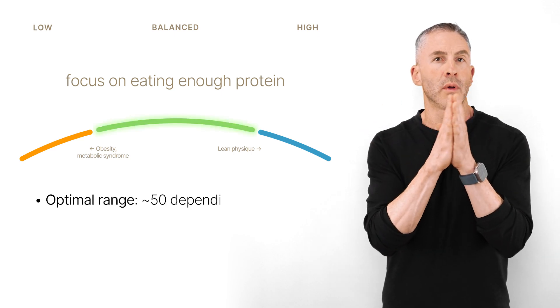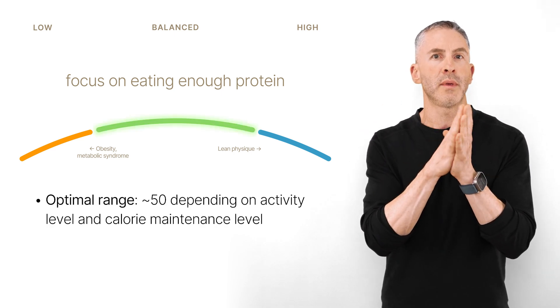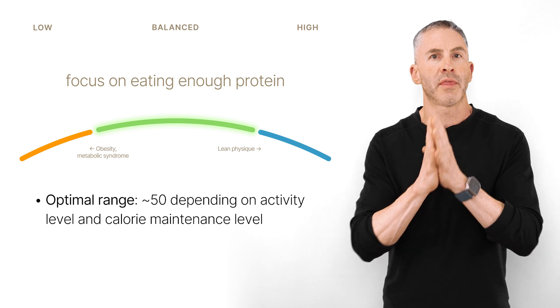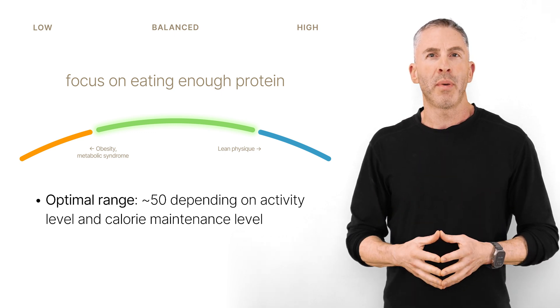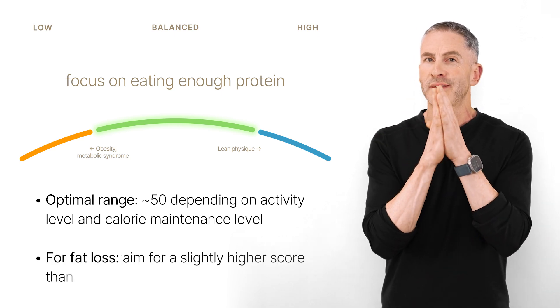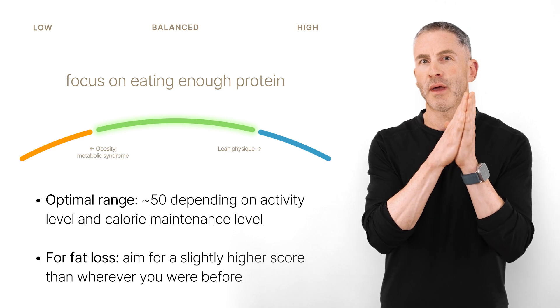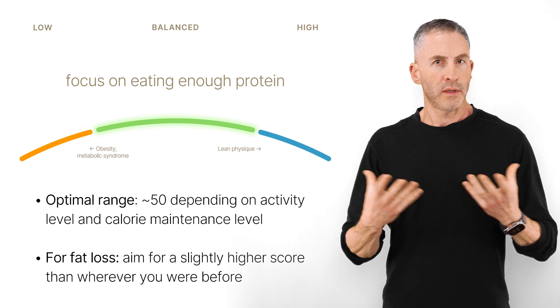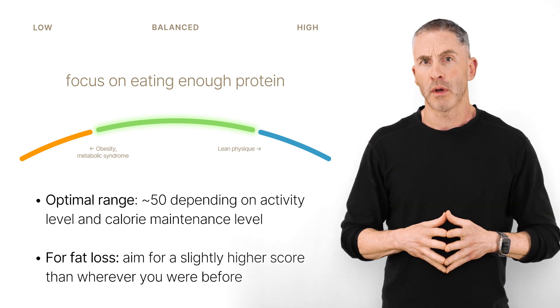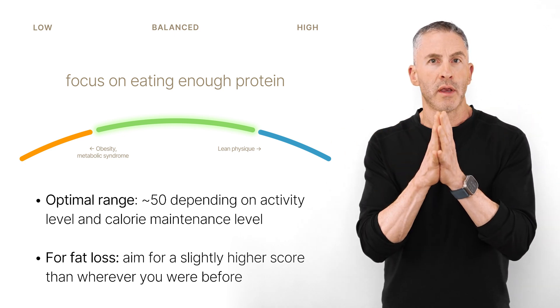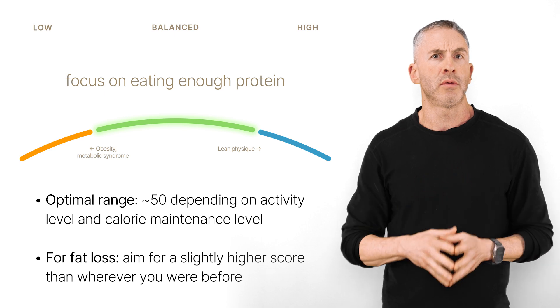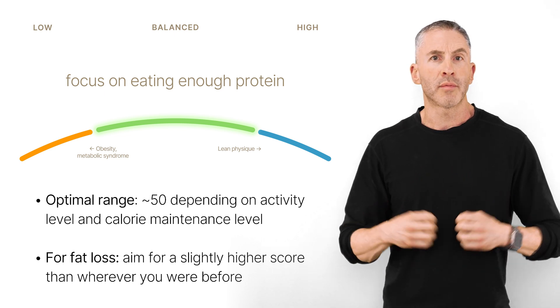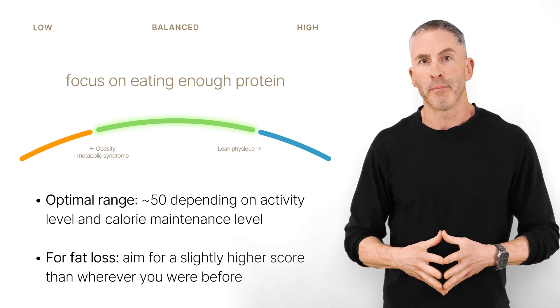The goal of the HAVA app is eating adequate protein while keeping your overall satiety score in an optimal range — somewhere around 50, for example. For fat loss, you want to be sustainably higher than wherever you were before. When you pay attention to achieving a protein target and staying in a good satiety range, it's much easier to achieve a diet that supports optimal body composition and metabolic health.